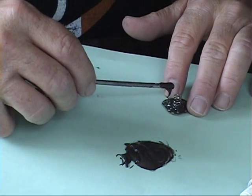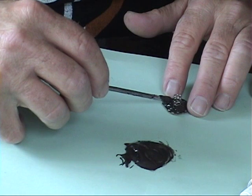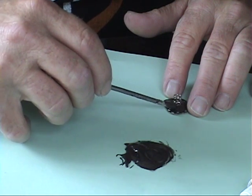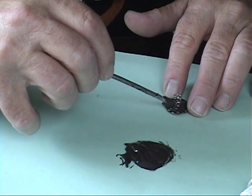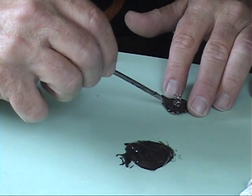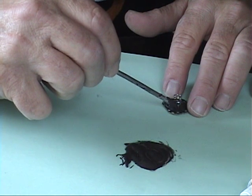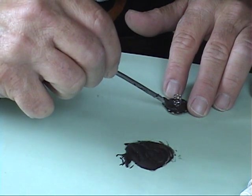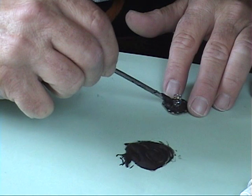Don't worry if a little bit of JB weld gets on some of the outside negative connections, as long as you have some exposed to attach wires to you'll be fine. This JB weld is also going to keep your spring attached to the circuit board.